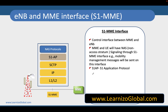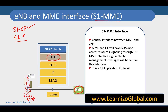In this video we are going to talk about the S1 MME interface. In some documents it is also referred to as S1-CP or S1-C interface, where CP stands for control plane. This is the interface between eNodeB and MME, and it typically uses a protocol called S1AP. S1AP protocol runs on top of SCTP — Stream Control Transmission Protocol.